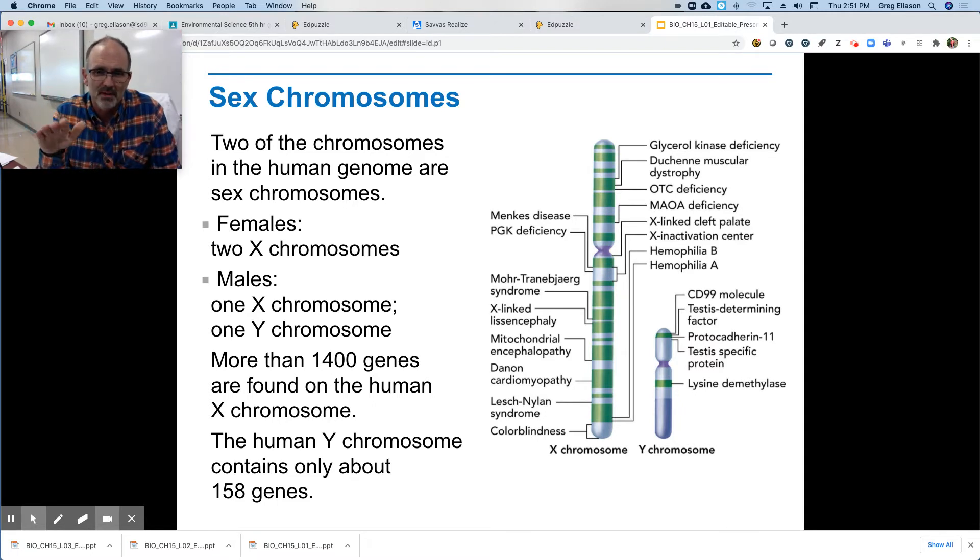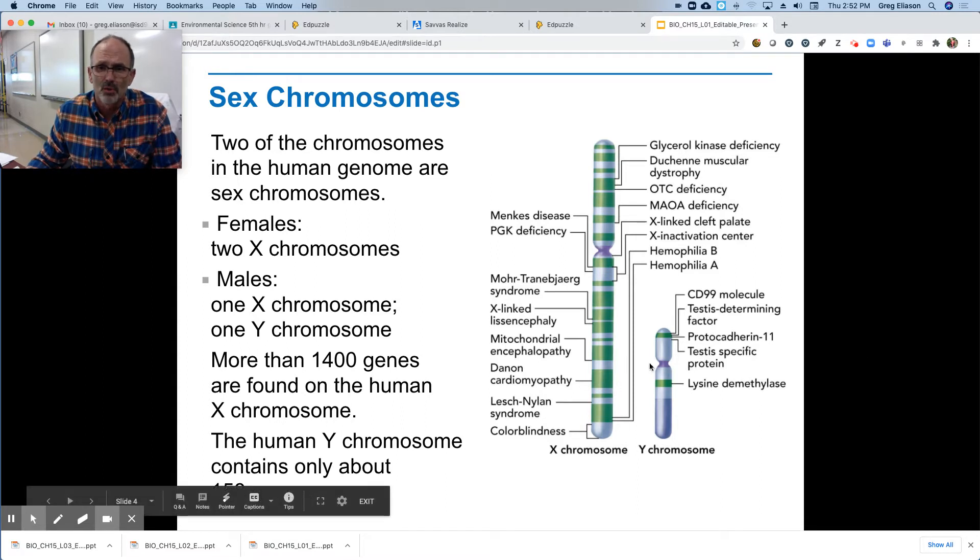So take some time and look at some of these. There's some familiar ones. Hemophilia is a typical X-linked trait. There's a cleft palate on one there. Muscular dystrophy typically occurs in males because they don't have another chromosome to react to that.